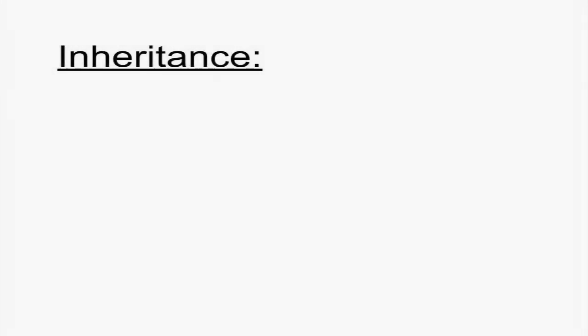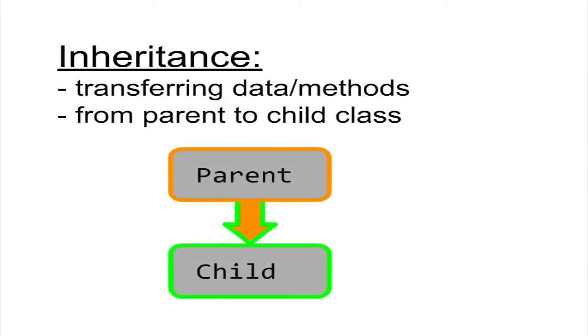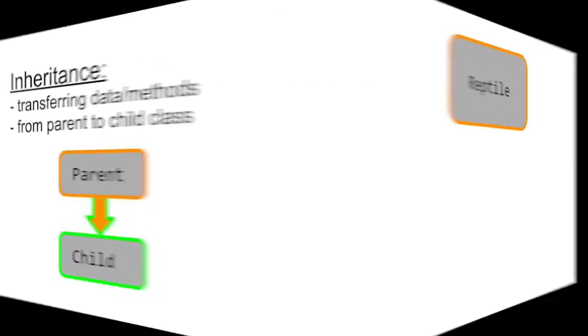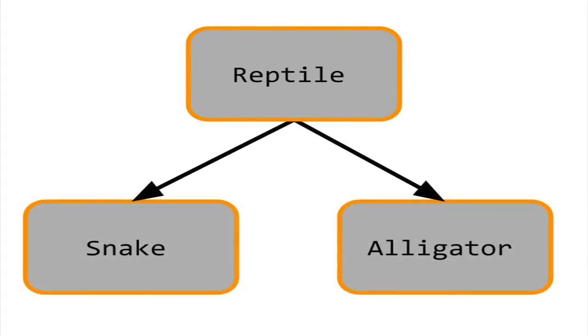Inheritance is the process of passing the attributes and behaviors of one class down to descendant classes. For example, you can start with a class like reptile and have its descendants be snake and alligator. Although snake and alligator have different attributes and behaviors, both classes are derived from the same reptile class.